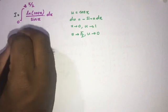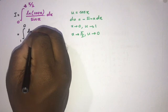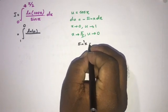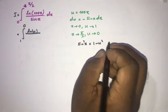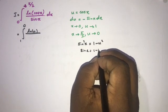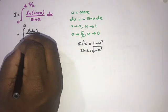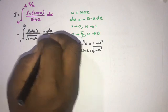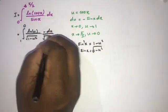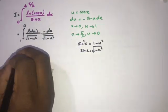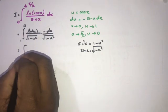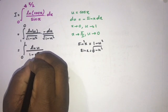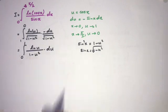The limits become 1 to 0. We have natural log of u over sin(x). Since sin²(x) = 1 - cos²(x) = 1 - u², sin(x) = sqrt(1 - u²). Also dx = -du / sqrt(1 - u²). The minus signs cancel when we swap limits, giving the integral from 0 to 1 of ln(u) / (1 - u²) du.